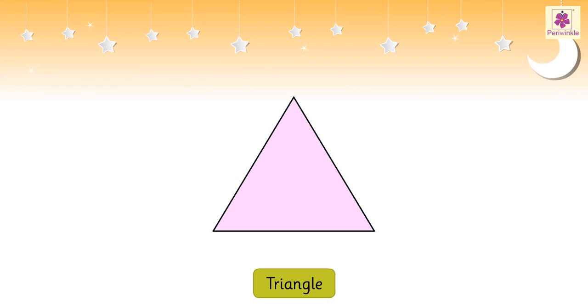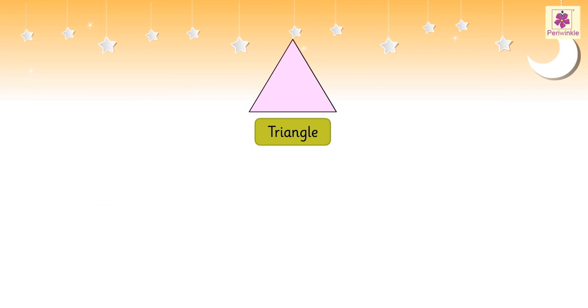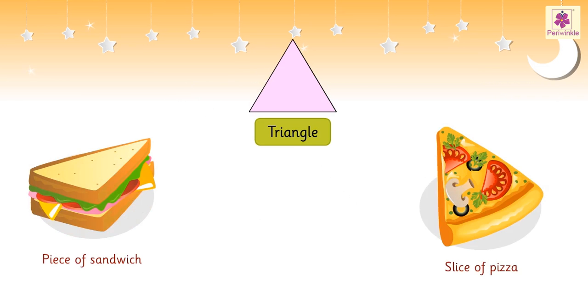This is a triangle. A triangle has three sides. The length of all the three sides can be the same or different. Examples of a triangle are a piece of sandwich and a slice of pizza.